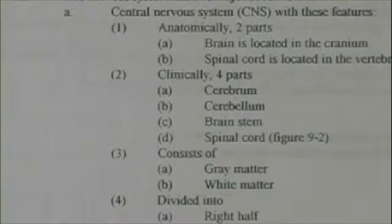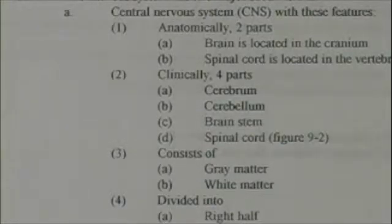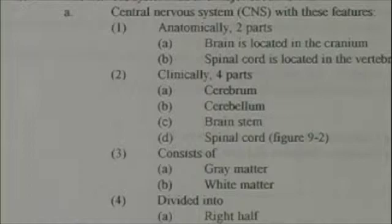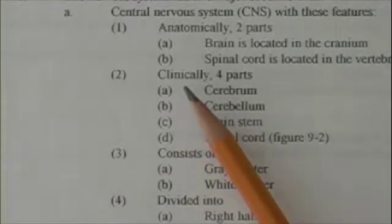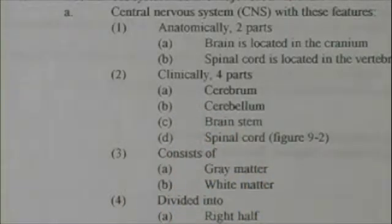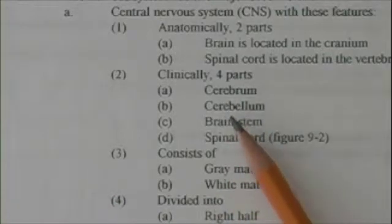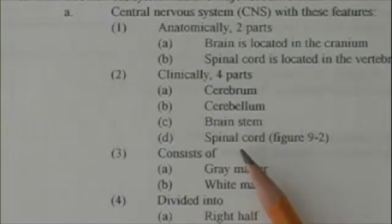Now, as you'll hear me say later, try not to think of the brain as something separate from the spinal cord — they work together as a unit. So if I ask a question about a major coordinating part of the nervous system, think of central nervous system instead of brain. From a clinical point of view, the central nervous system has four parts: the cerebrum, the cerebellum, the brain stem, and the spinal cord.